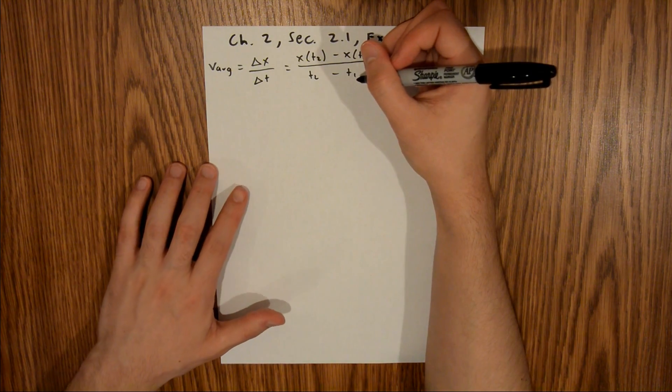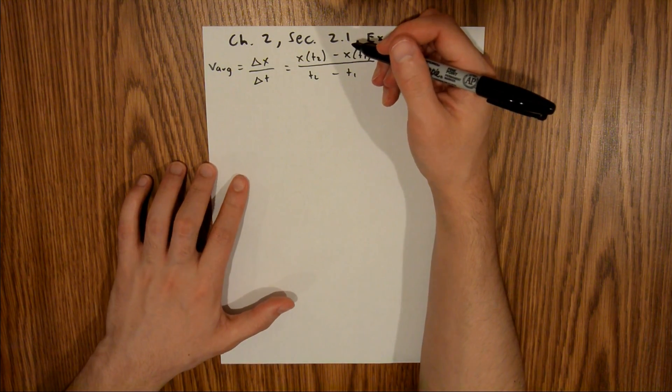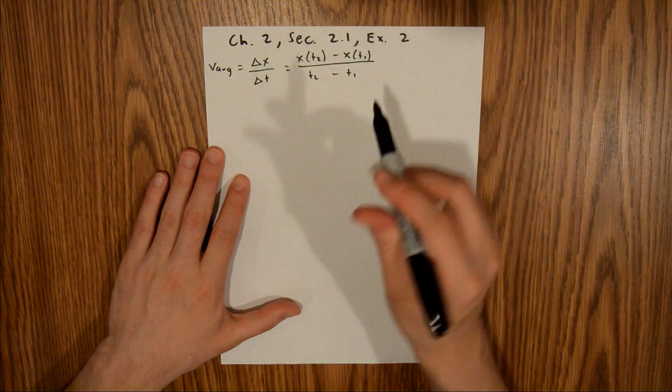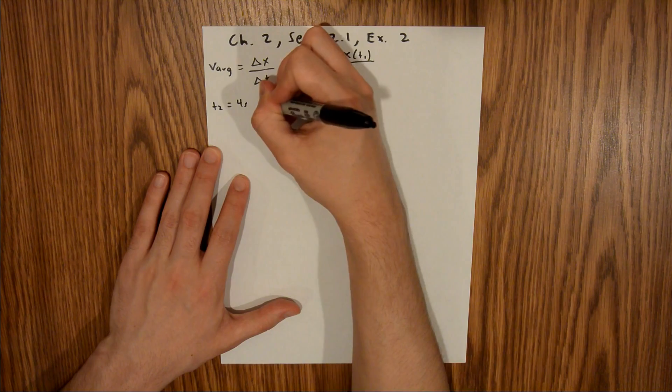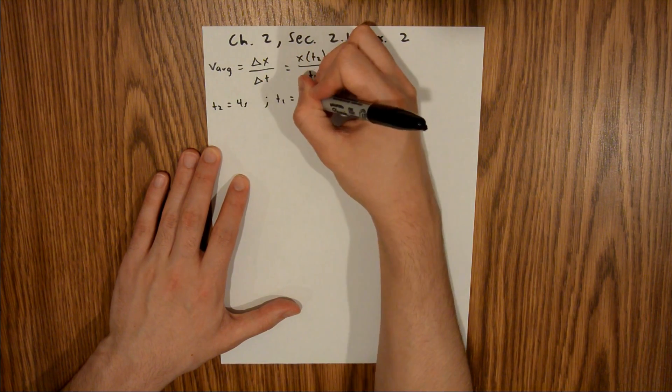In the problem, we are asked to find the average velocity from t equals 0 to t equals 4. So we're given two of these values already: t2 equals 4 seconds, and t1 equals 0 seconds.